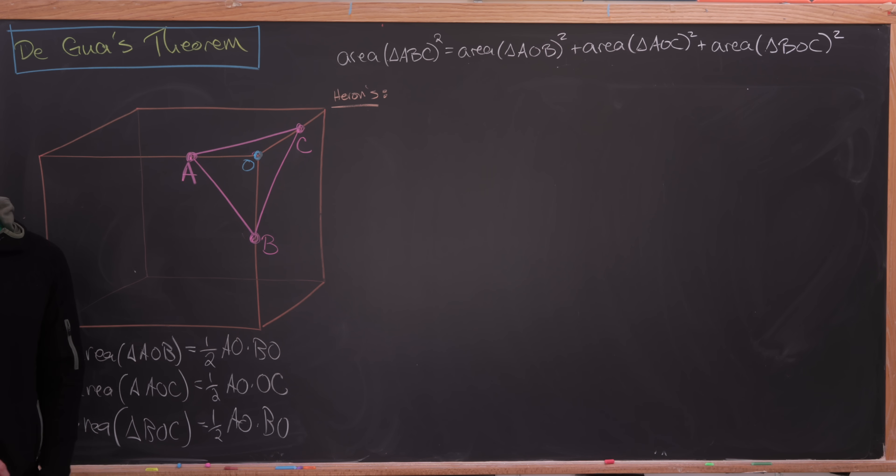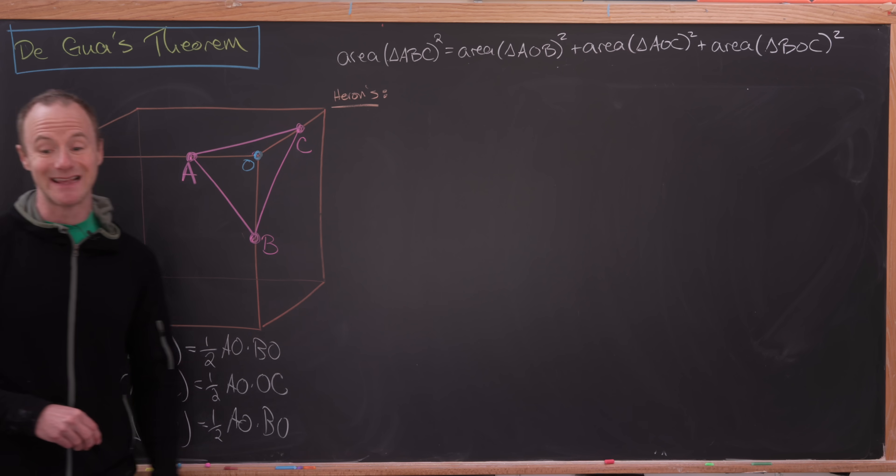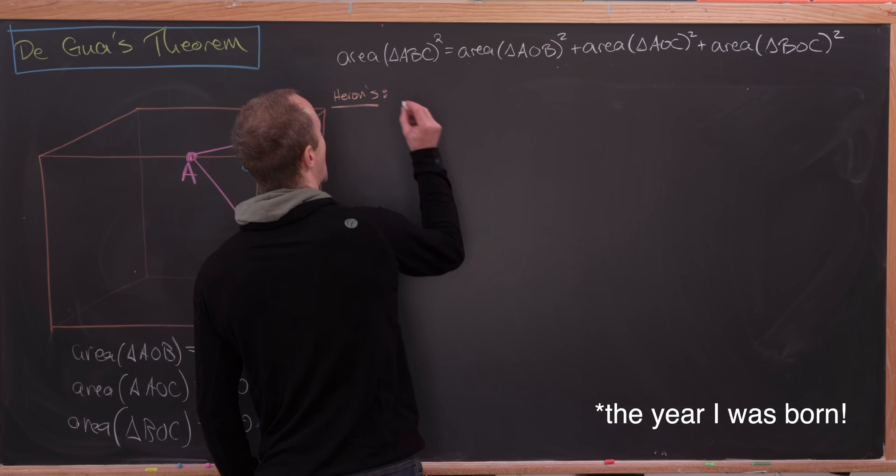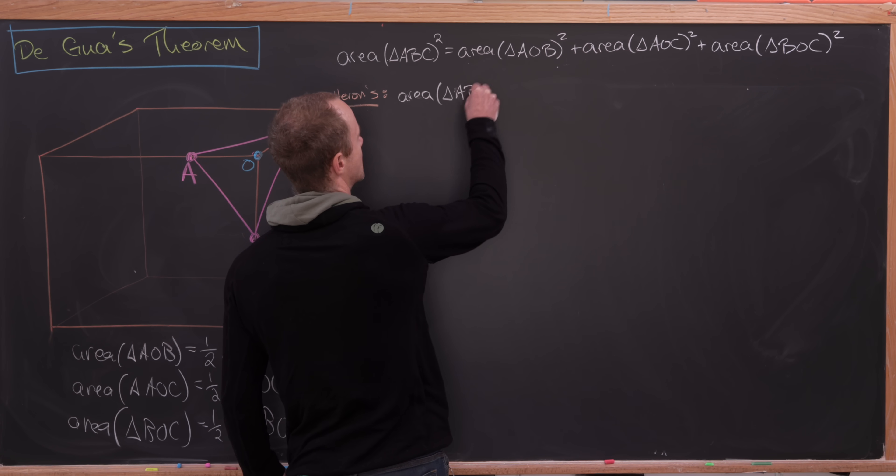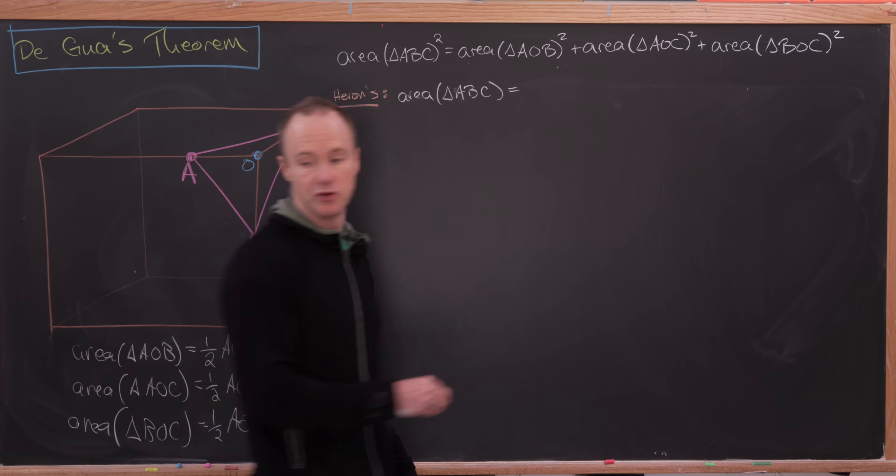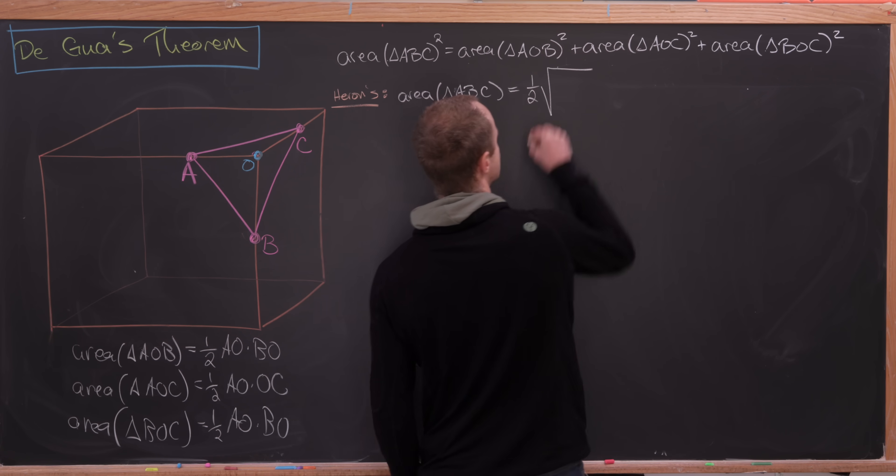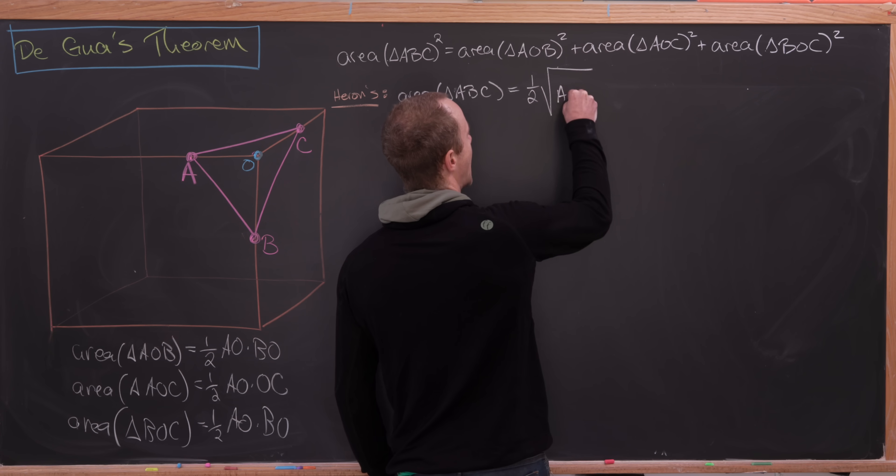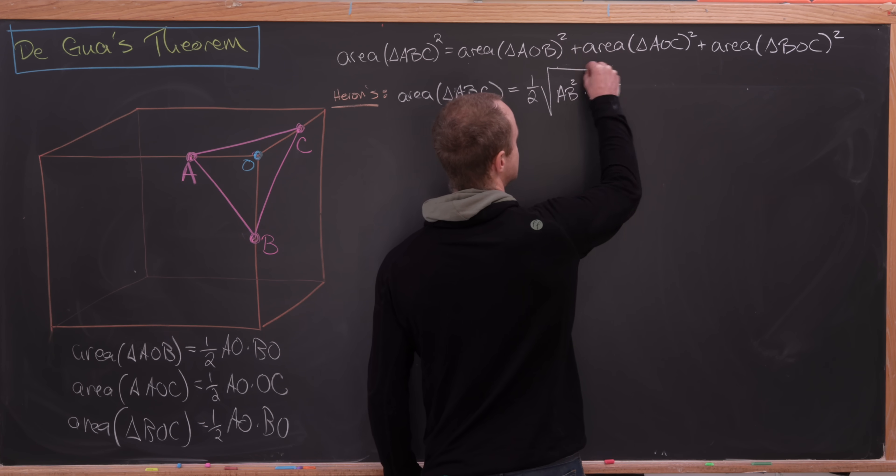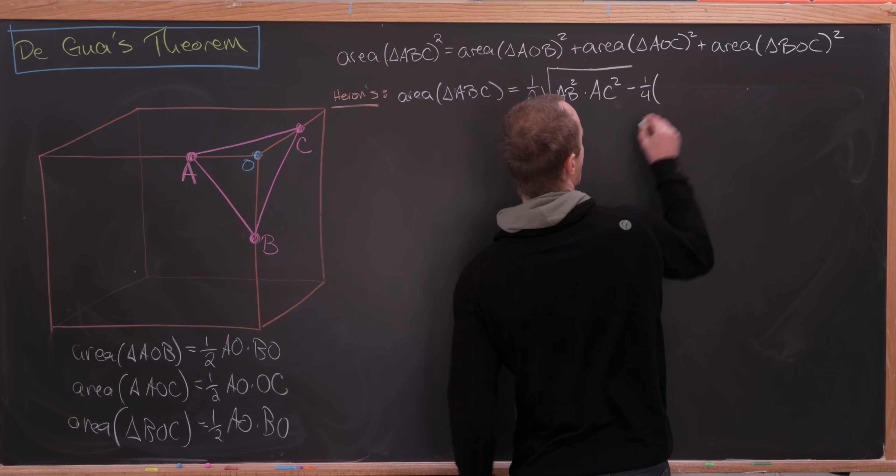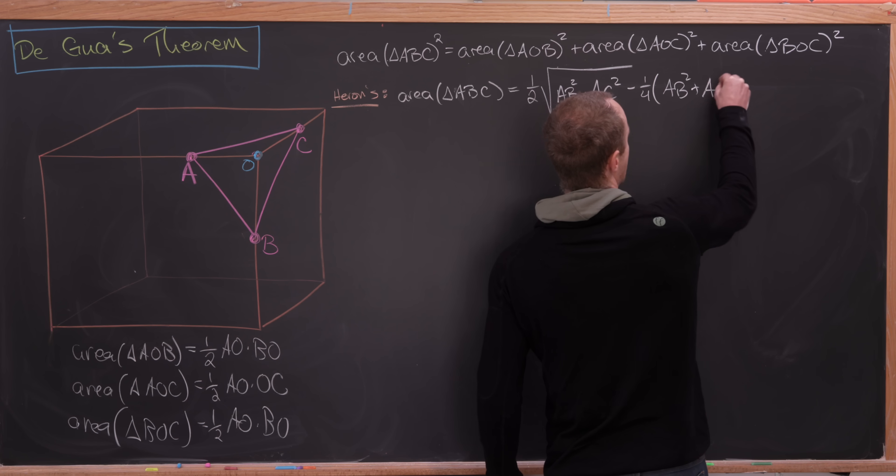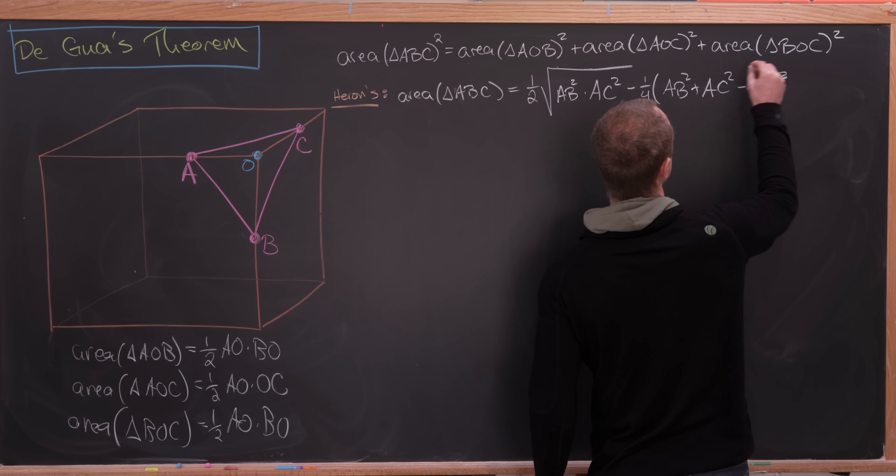And we're not going to use the classical version of Heron's formula. We're going to use an equivalent version that was found in a Chinese text in 1247, and that specialized to our setup looks like this. So area of triangle ABC is equal to one-half times the square root of AB squared times AC squared, and then minus one-quarter AB squared plus AC squared minus BC squared, and then all of that is squared.